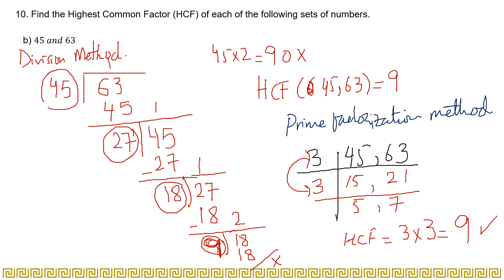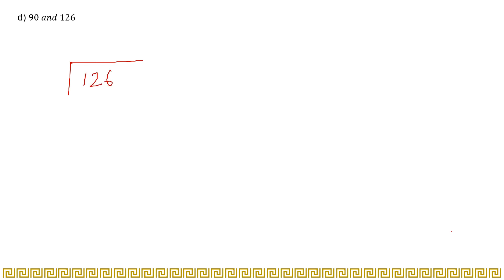There is also a third method — listing down the factors and finding the common ones — which you can use to solve for HCF. Now moving on to part (d), again using the division method: write the greater number 126 inside and the smaller number 90 outside.